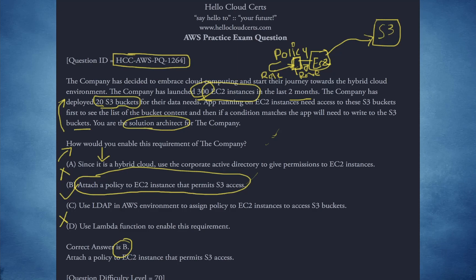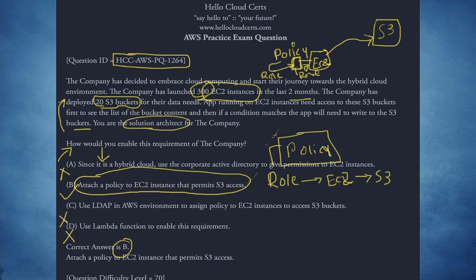D — use a Lambda function to enable this requirement. No, that's not how it works. The correct answer is the classic use case of a role: use the role associated with EC2 to give it access to S3 and other resources. The policy will govern what this role can and cannot do. It's a JSON document, and that JSON is in the role.